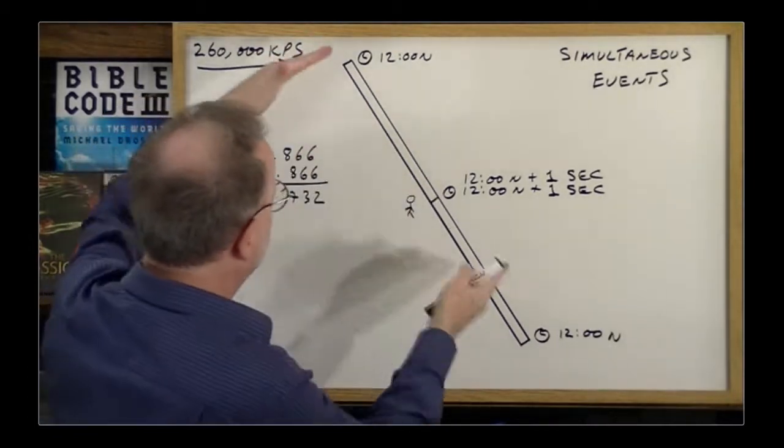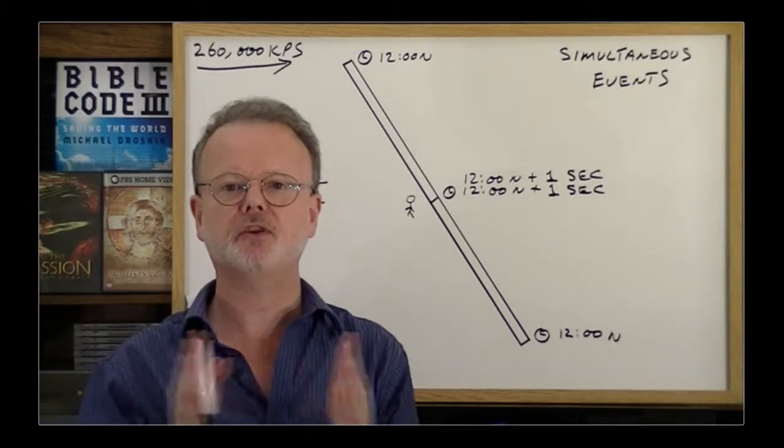because all these different observers would also measure the length of this as different lengths, because their rulers are all of different lengths. But that doesn't necessarily mean there is no absolute length, because they're all measuring something differently. And to measure something differently, you have to have a something to be measuring differently. In other words, you need the absolute. An absolute has to exist such that you can measure things differently.